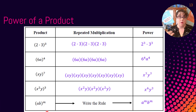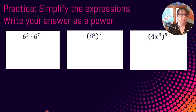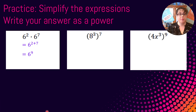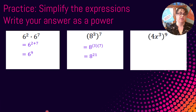So we've learned a whole bunch about products — let's do some practice problems. We're going to keep these as powers. So if I have 6 squared times 6 to the seventh, I add those exponents: 2 plus 7 is 9, so this is 6 to the ninth. If I have 8 to the third to the seventh power, numbers next to parentheses mean multiply — so x to the 3 times 7, and 3 times 7 is 21, so this is x to the 21st.